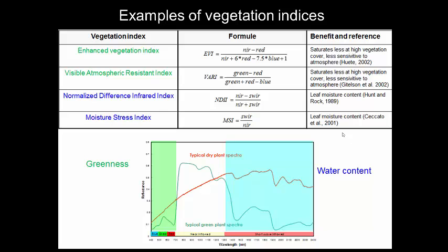Water content vegetation indices, like the Normalized Difference Infrared Index, NDII, or the Moisture Stress Index, MSI, provide a measure of the amount of water contained in the foliage canopy. Water content is an important quantity of vegetation because higher water content indicates healthier vegetation that is likely to grow faster and be more fire resistant.